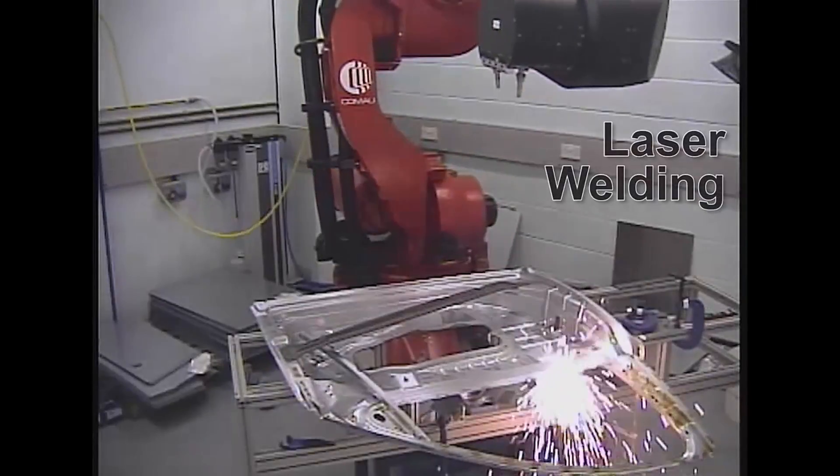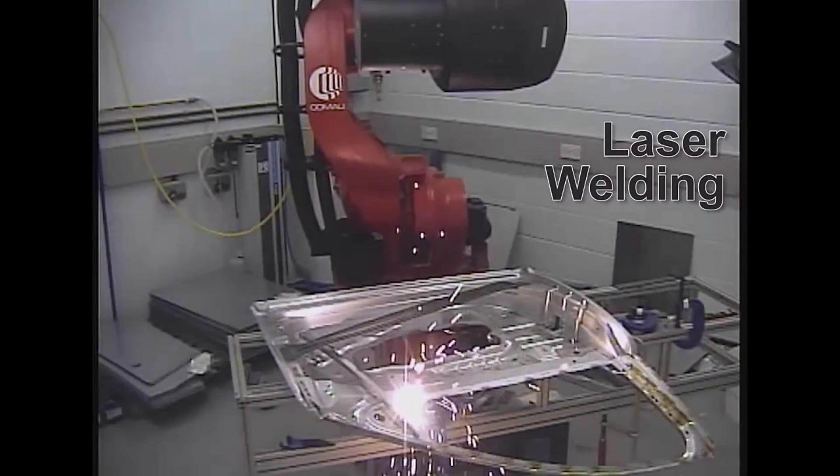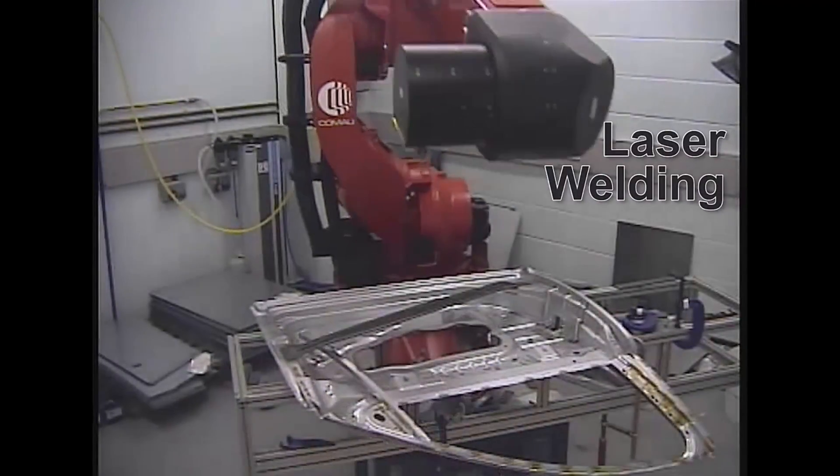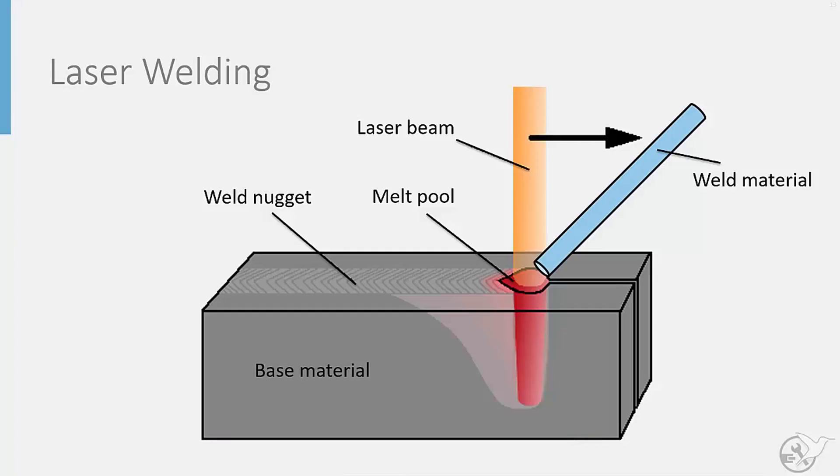Laser beam welding is an alternative method for welding metal parts together. The overall process is quite similar to arc welding, with the exception of the method of heating used. As the name suggests, laser beam welding uses a high energy laser beam to melt a rod of weld material that is then deposited in the melt pool of the weld.